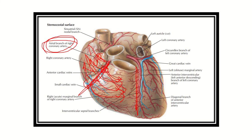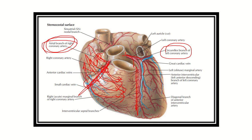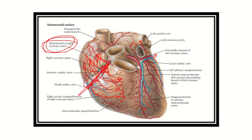The left coronary artery arises from the left posterior aortic sinus and gives the circumflex branch, which goes posteriorly around the heart, supplying the left atrium area. It also passes to the anterior interventricular groove and gives branches there. The left coronary artery supplies the left atrium, left ventricle, anterior interventricular groove, a small part of the right ventricle close to the anterior interventricular groove, and the anterior part of the interventricular septum.